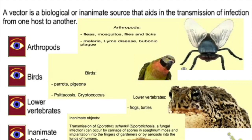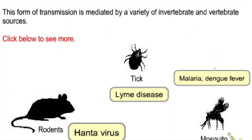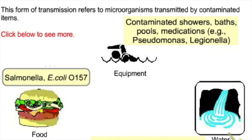A vector is a biological or inanimate source that aids in the transmission of infection from one host to another. Examples of vector-borne horizontal transmission: rodents transmit hantavirus, pigs can be associated with Lyme disease, and mosquitoes transmit malaria and dengue. Vehicles for easy transmission of disease include food, water, and equipment.